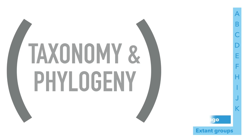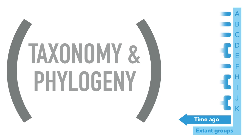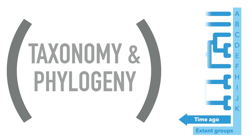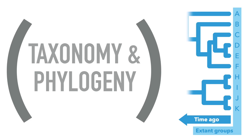Now, we start traveling back in time, to the left, and represent the lineages of ancestors of each extant group with lines, or branches. As we go farther back in time, pairs of branches start coalescing into single branches, and then coalescing again, representing ancestral single lineages that, at some point in time, split into multiple lines. These groups of lineages are also called clades. Eventually, if we go far enough in time, we expect to find a single common ancestor that gave origin to all the diversity we have in A through K. That common ancestor of an entire tree is also called the root of the tree.